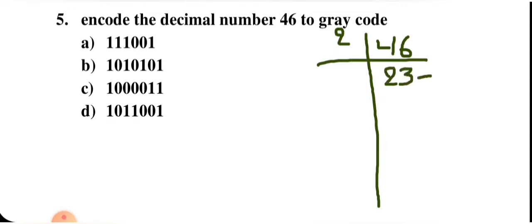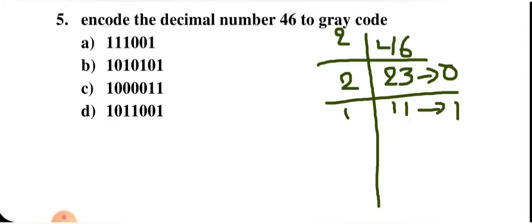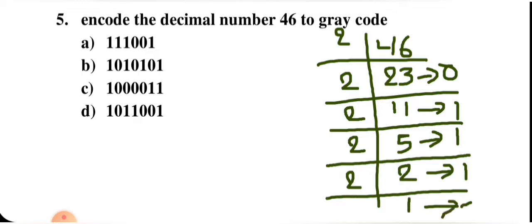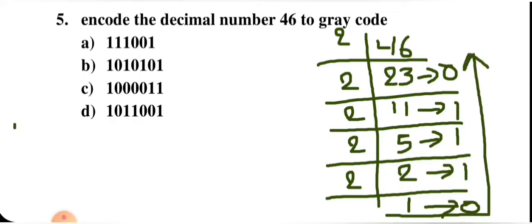Dividing 46 by 2 repeatedly, the remainders going upward give the binary representation. 46 in binary is 101110.